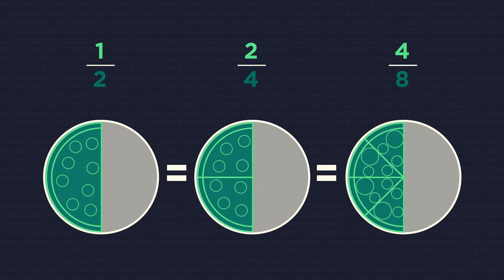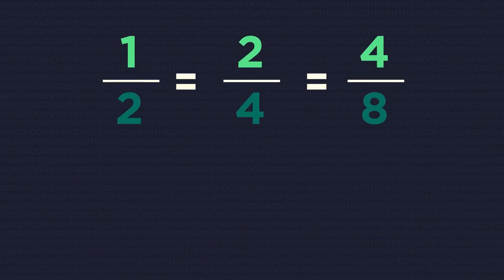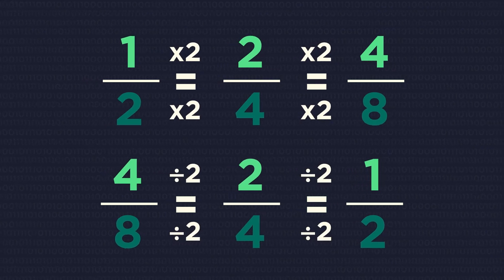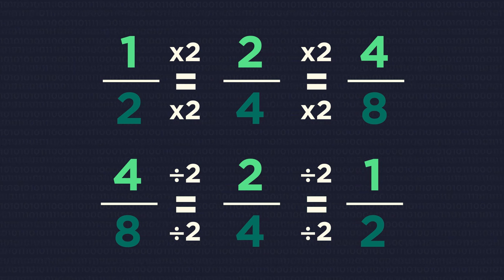Visually, it could be represented like this. How are they the same, you ask? Well, once you multiply or divide the top and the bottom parts of the fraction by the same number, the value stays the same.